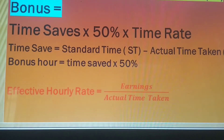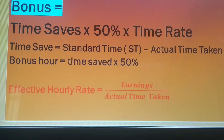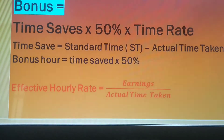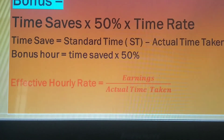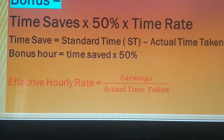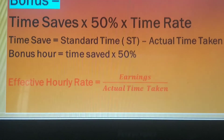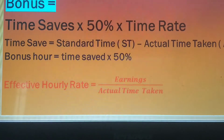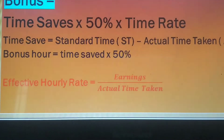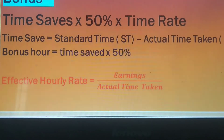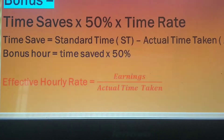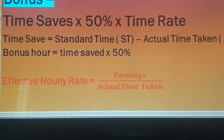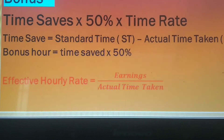The effective hourly rate is different from the time rate. The time rate is the standard rate set by the factory, while the effective hourly rate is the actual rate at which the worker earns. It is calculated as: total earnings (time wages plus bonus) divided by actual time taken.